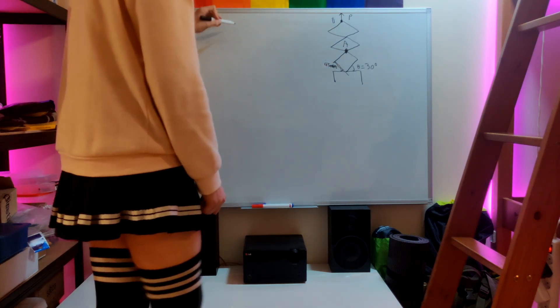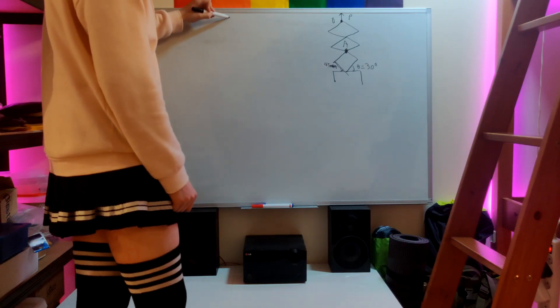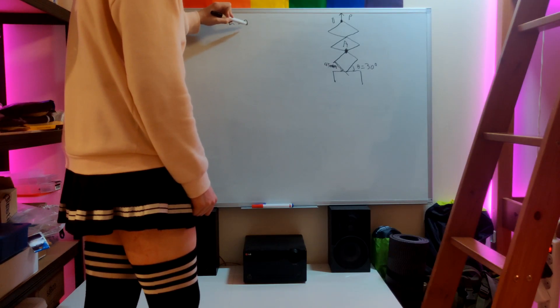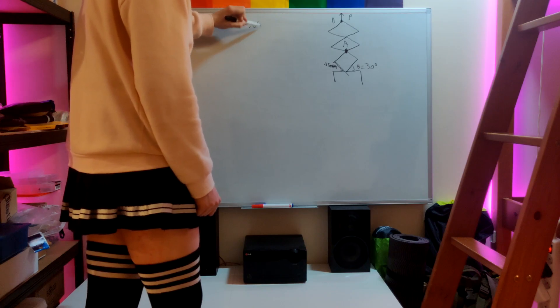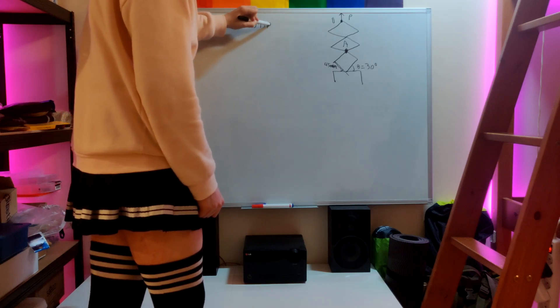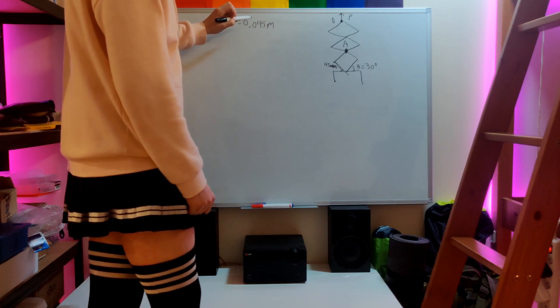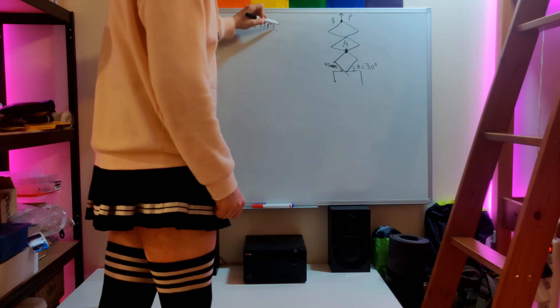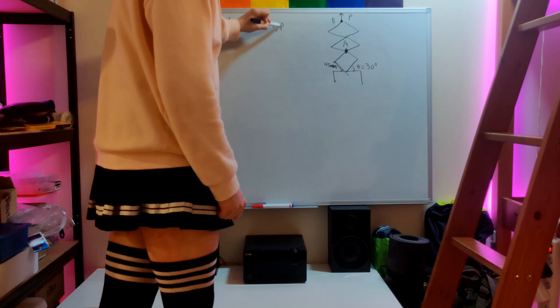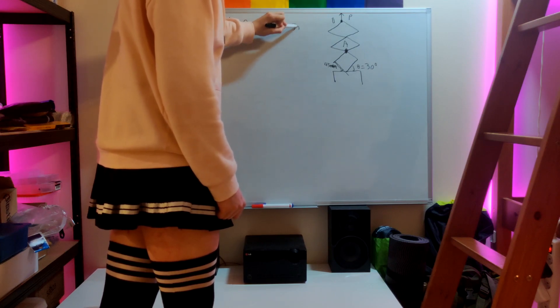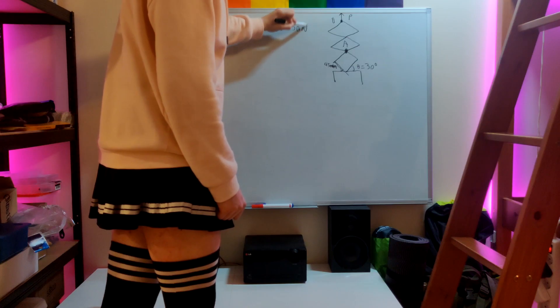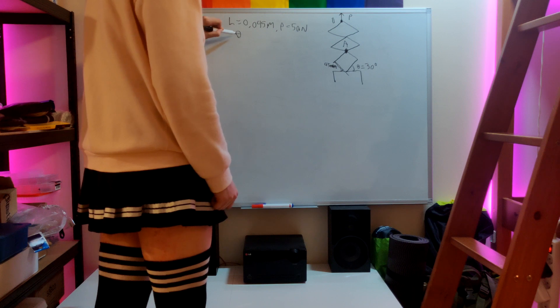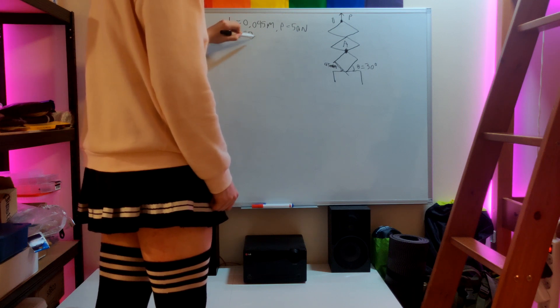So now let's write all of the parameters here. L equals 0.045 meters which is 45 millimeters. Let's say that P is 50 newtons and the angle theta is 30 degrees.